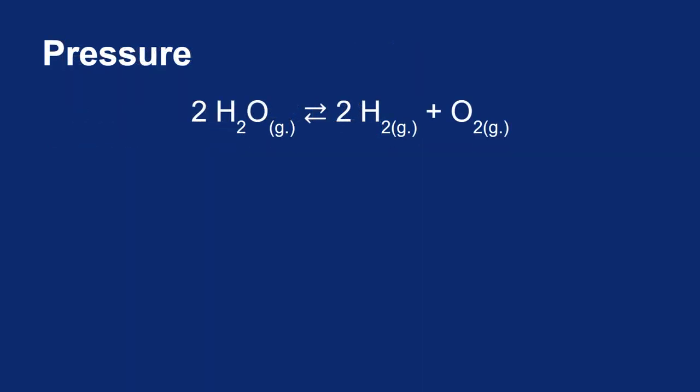Let's look at a similar reaction, but there are some differences. First I flipped it, so now the water is a reactant and the hydrogen and oxygen are products. And then I went back to a homogeneous process where all three substances are gases.